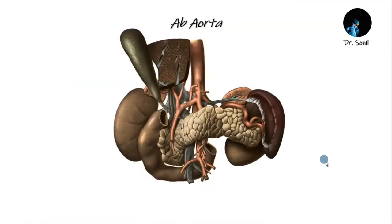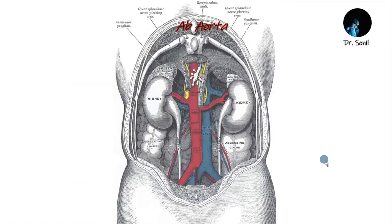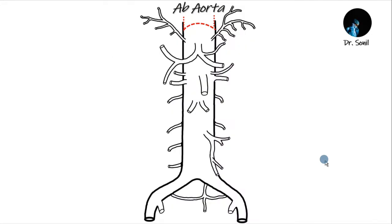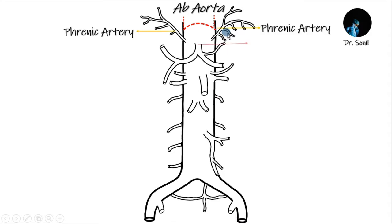Inferior phrenic or phrenic arteries, starting from the 12th thoracic vertebra, originate above the celiac trunk, below the diaphragm, and pass upward and medially to the suprarenal gland.